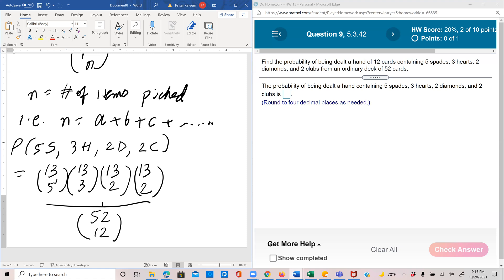Times 78 squared divided by 52 combination 12. 0.0109.